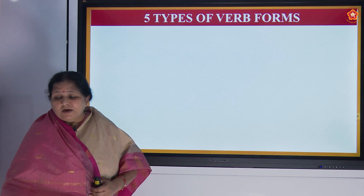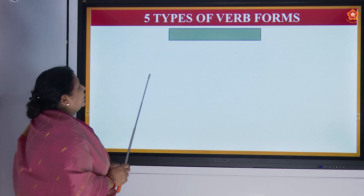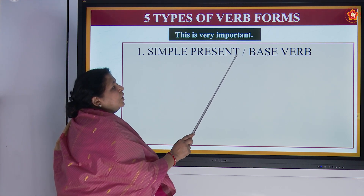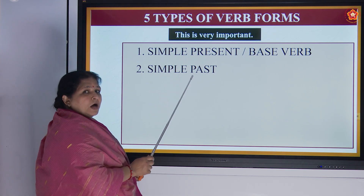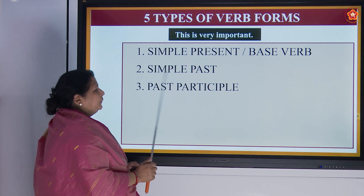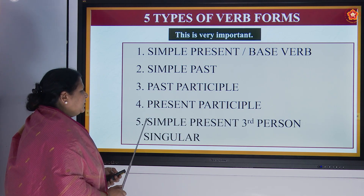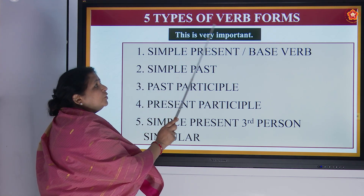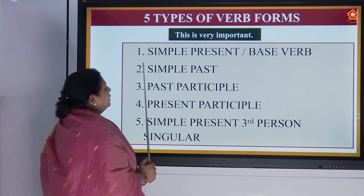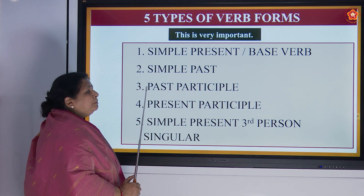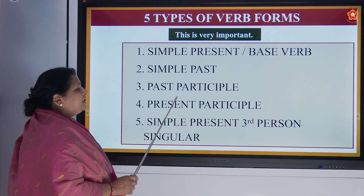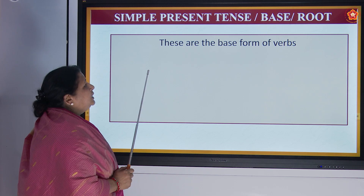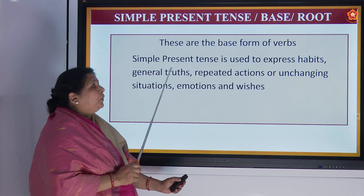There are five types of verb forms, as we have done in the previous class in the chart. The first one is simple present or base verb. The second one is simple past. Third one is past participle. The fourth one is present participle, and the fifth one is simple present, third person singular. Now, we have not studied these in depth — this class we are going to study in a deeper way what each one means.